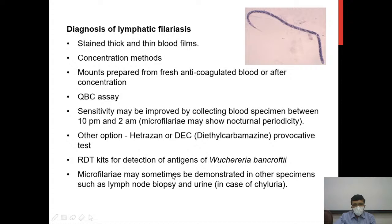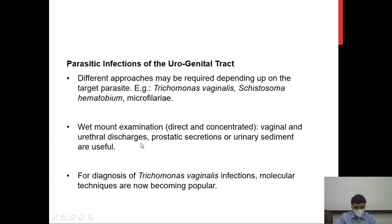Microfilariae may sometimes be demonstrated in other specimens such as lymph node biopsy or urine in cases of chyluria. For urogenital tract parasitic infections, different approaches are required — common parasites include Trichomonas vaginalis, Schistosoma haematobium, and microfilariae. Wet mounts from vaginal or urethral discharges, prostatic secretions, or urinary sediment may be used. PCR assays and molecular techniques are now becoming more popular for Trichomonas vaginalis diagnosis.